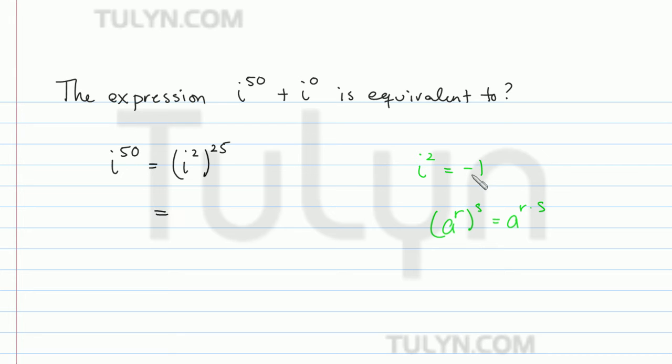But then i squared is equal to negative 1. So we have negative 1 to the 25th power. So how do we evaluate that? Remember that if you have negative 1 to any power n, that's going to equal positive 1 if n is even. So think of negative 1 squared, it's going to be positive 1.